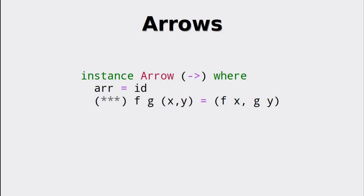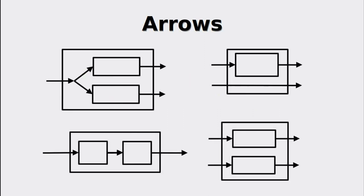Let's look at an example instance of this class — the instance for the function type. As we can see, the pirate function doesn't have to do any lifting, since functions are already composable. The triple star (***) is defined in a trivial fashion and the rest of the class is derived from it.